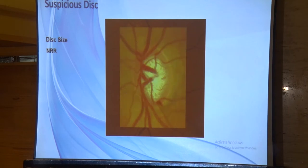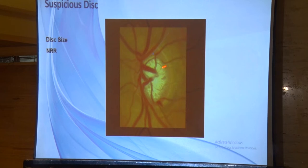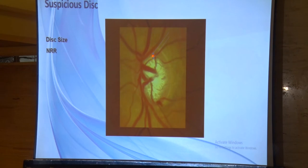If we don't dilate, we will definitely miss disc hemorrhage. Here we can see a disc hemorrhage. Also important is the baring of the circumlinear vessel — a circumlinear vessel should follow the disc contour, but if it is not following the cup contour, it means it has receded, and this patient might be a glaucoma suspect. If serial disc photographs show this distance increasing, it is a sign of progression that should be noted.